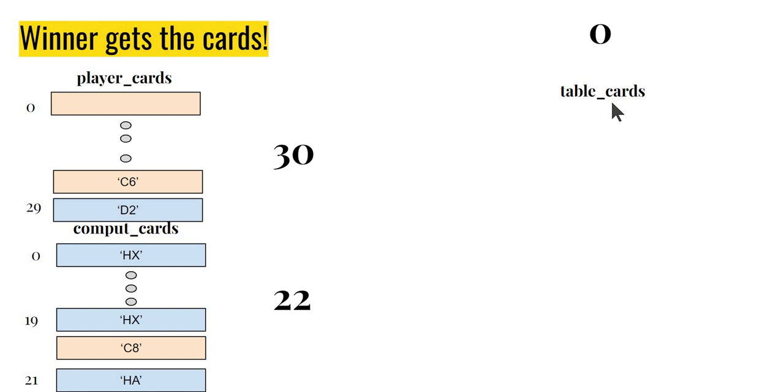Once again, table cards are 0. Player now has 30 cards, computer has 22 cards. Remember, the total is 52. If a war had happened again, the same thing would have happened - both would contribute 3 cards and a 4th card to resolve, and whoever wins gets all the cards. This just continues.